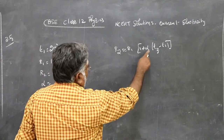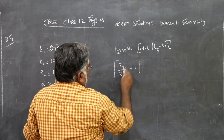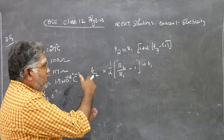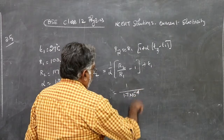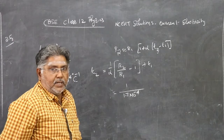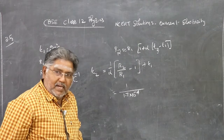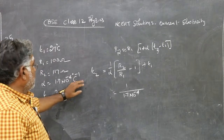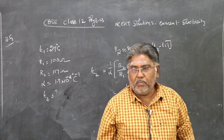This is a direct application of the formula. Everything is given except T2, which we need to find. Rearranging: T2 = (R2/R1 − 1) × (1/α) + T1. Note: α is in per degree Celsius. Since this represents a temperature difference, converting to per Kelvin gives the same value — no need to add or subtract 273.